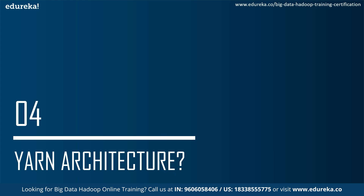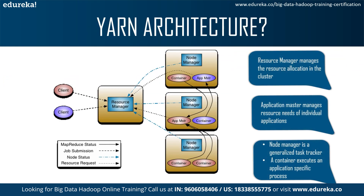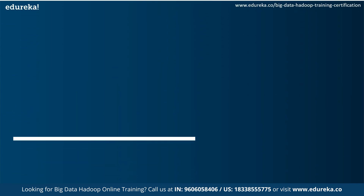In the YARN architecture, the global ResourceManager acts as the master daemon tracking available nodes and resources. The JobTracker's responsibilities are split into two: the ResourceManager, which manages resource allocation in the cluster, and the ApplicationMaster, which manages resource needs of individual applications. The TaskTracker is generalized into the NodeManager, which provides computational resources in the form of containers and manages processes running in those containers. In MR1, JobTracker handled both job scheduling and monitoring, but in YARN these responsibilities are handled by separate entities.